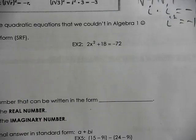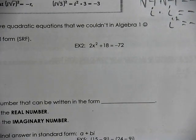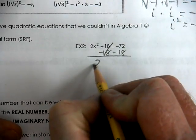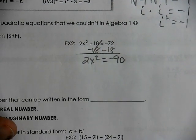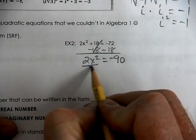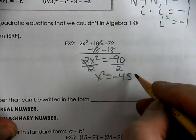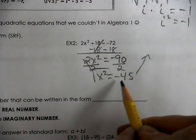So we move over to our next example. You start thinking about what you need to do first. What do you see? How would you handle it? We're going to subtract the 18. That gives us negative 90. We're going to divide by 2. So negative 90 divided by 2 is negative 45.